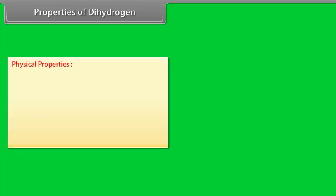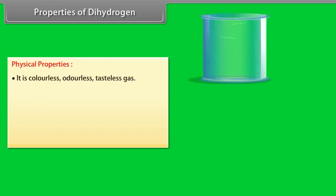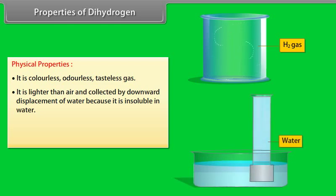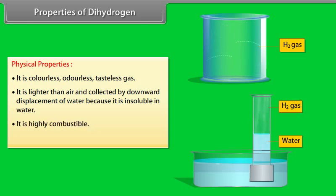Properties of dihydrogen. Physical properties: It is colorless, odorless, tasteless gas. It is lighter than air and collected by downward displacement of water because it is insoluble in water. It is highly combustible. It is the lightest of all elements.